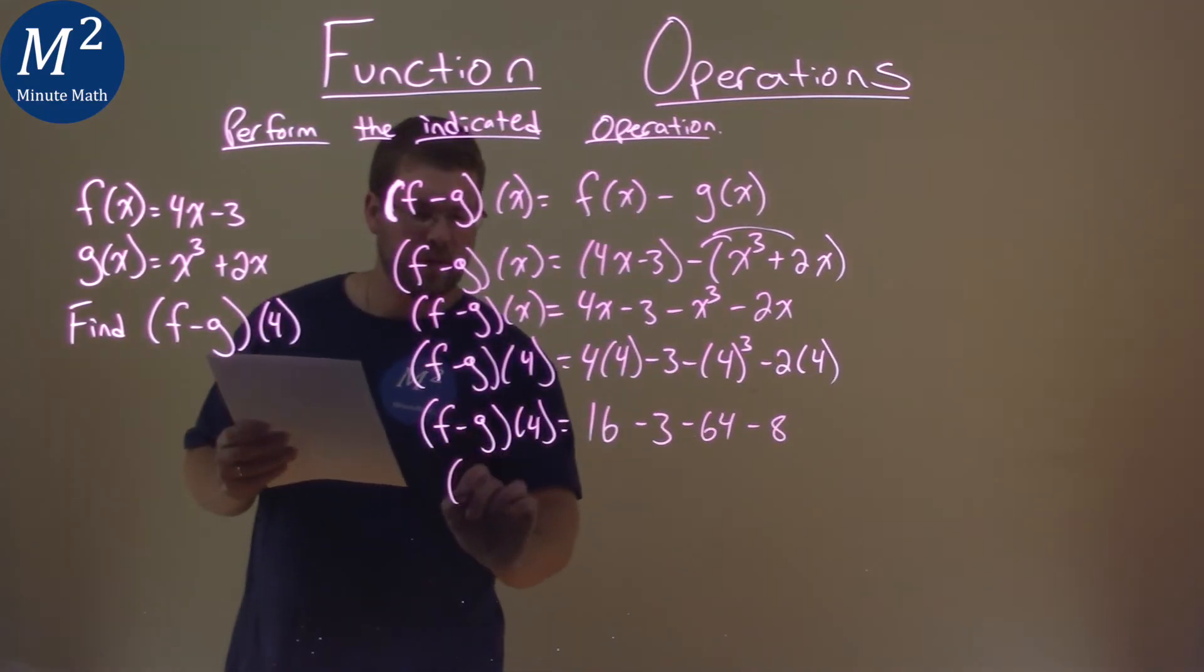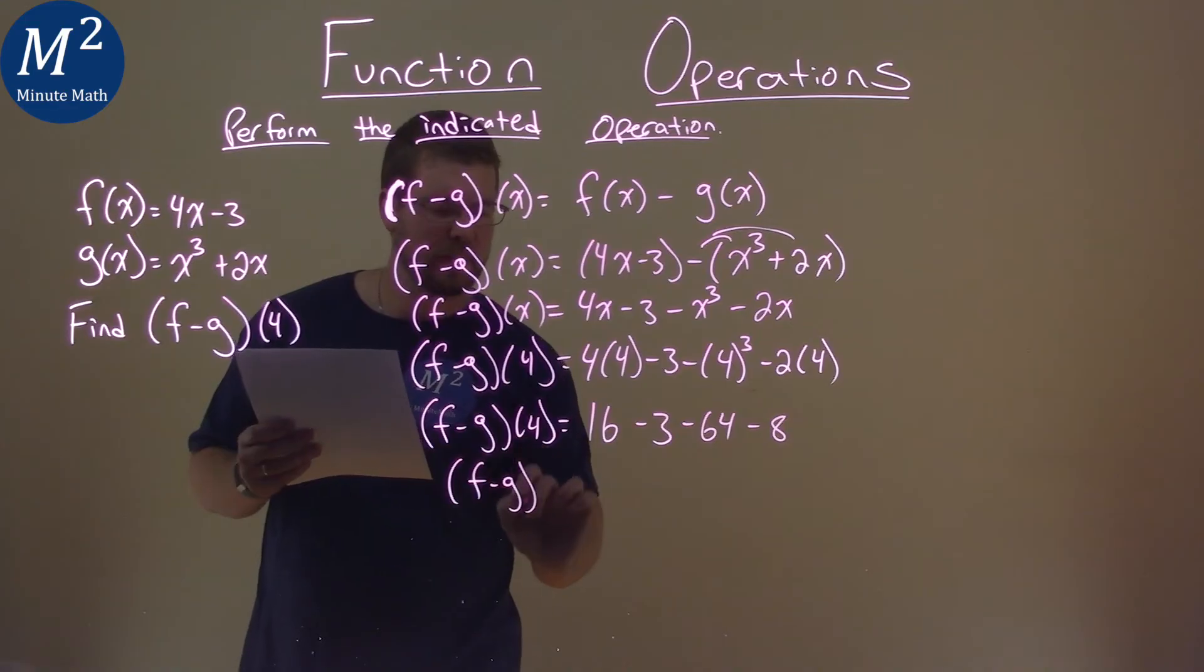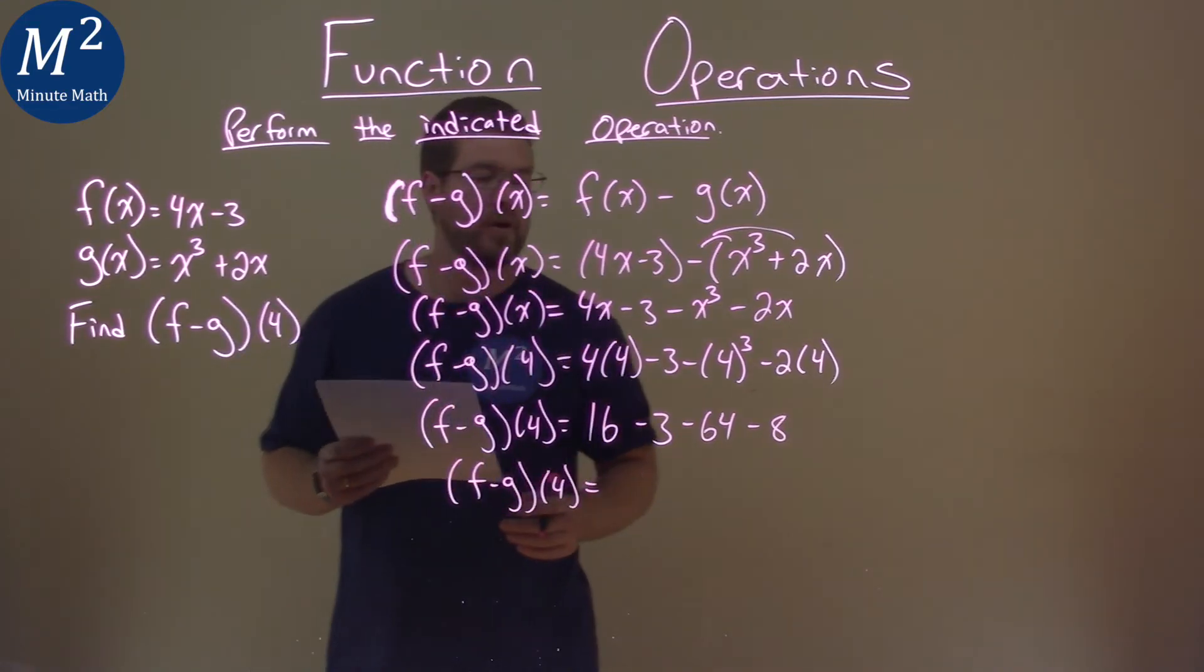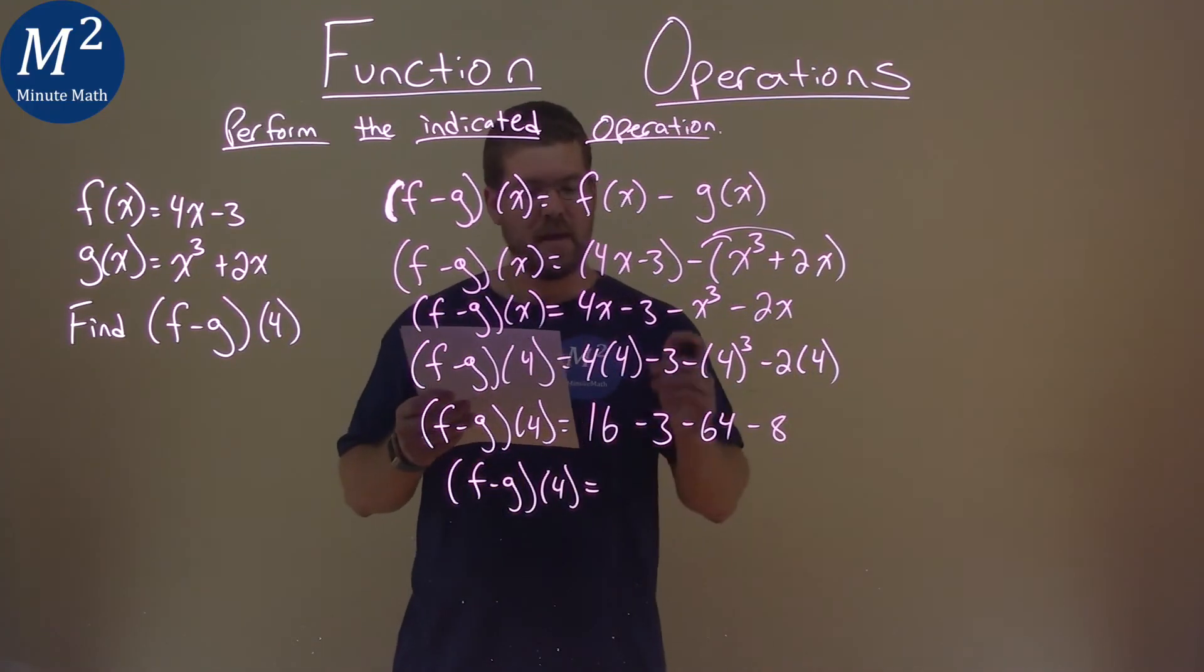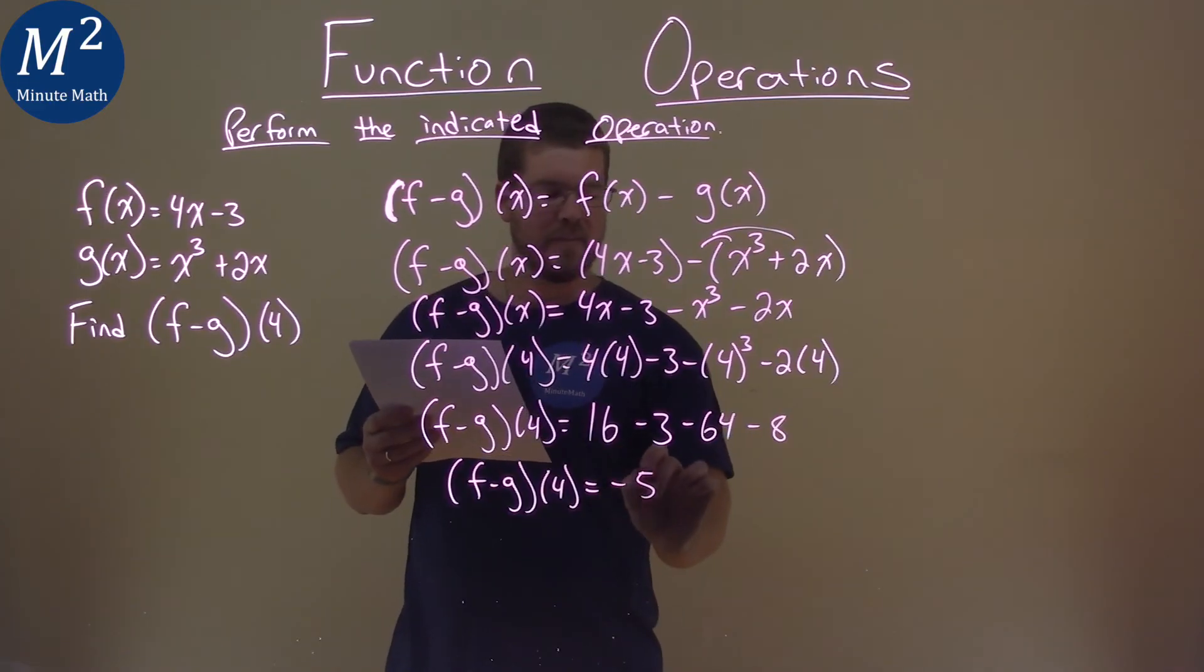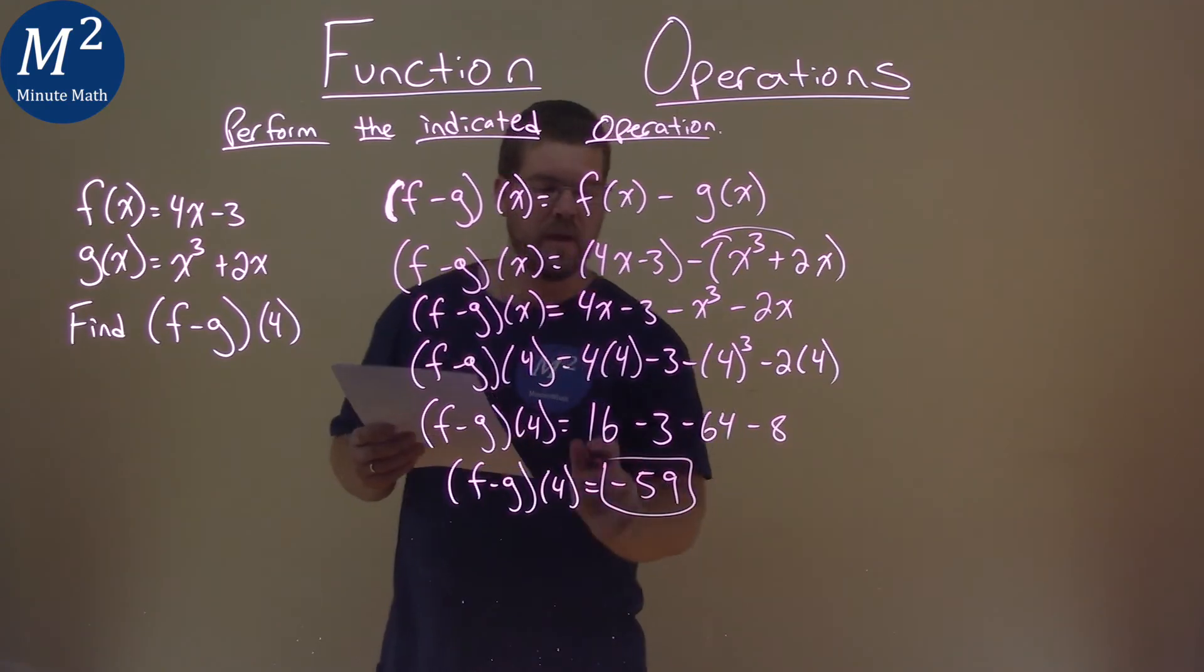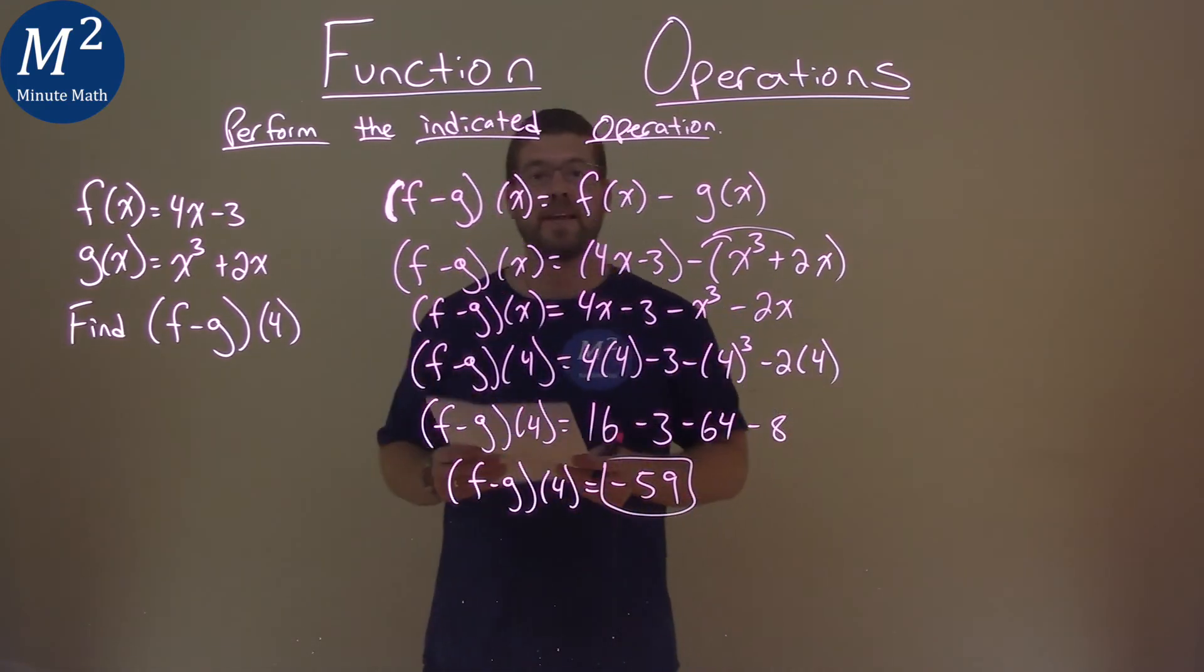So, (f - g)(4)—let's add and subtract these up. 16 minus 3 minus 64 minus 8 comes out to be negative 59. Our final answer is negative 59.